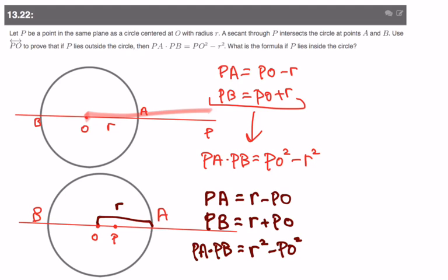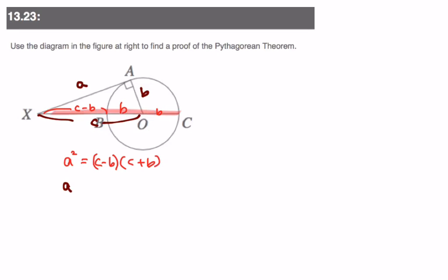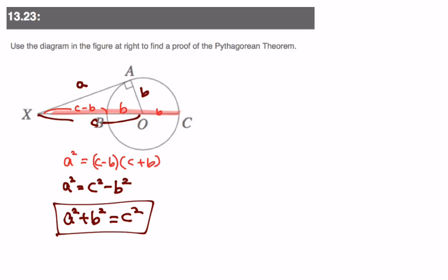Last question: showing the Pythagorean theorem using circle relationships. Let AX equal A, radius equal B, and XO equal C. Then XB (the outer segment of the secant) equals C minus B. Using the circle relationship: A squared equals (C minus B)(C plus B), which by the difference of squares gives A squared equals C squared minus B squared. Adding B squared to both sides gives A squared plus B squared equals C squared — the Pythagorean theorem. That was chapter 13.